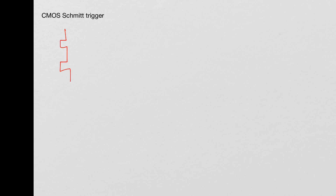First let's look at a CMOS inverter, which is built using one P-channel and one N-channel MOS device. Here is your V-in and here is your V-out. This is tied to VDD, the supply voltage, and this is ground.